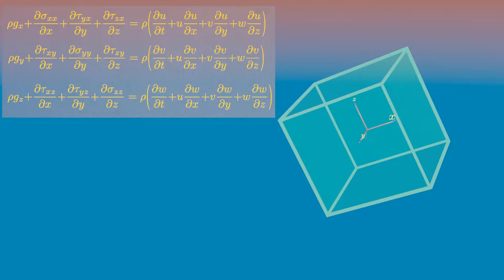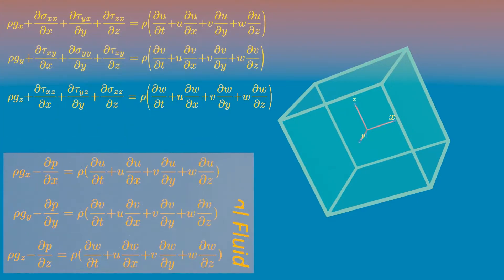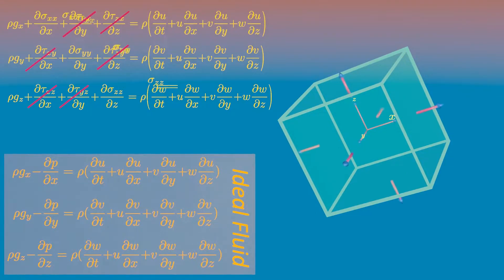Now, if we consider the fluid to be an ideal fluid, then the equations of motion will reduce to a simpler form. In particular, there will be no viscous shear stress on the particle, and these three normal stress components will represent the pressure.